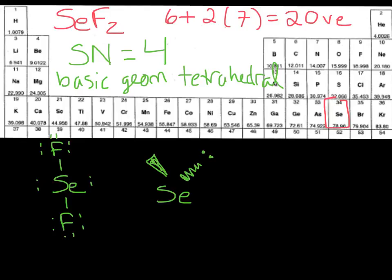And so remember, this hashed line means it's going back, this bold wedge coming out at you, and then the fluorines are on each side. And remember, on a molecular geometry structure, we don't need to show the lone pairs on fluorine anymore. We just needed those in order to figure out if we had any lone pairs on the central atom.